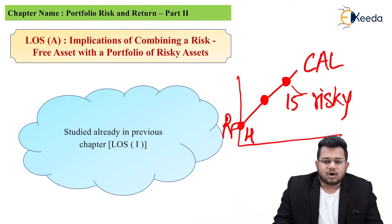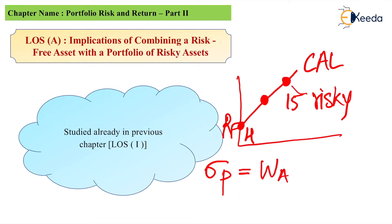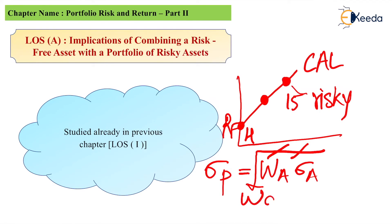Now, in this concept you had studied one unique formula: the standard deviation of the portfolio is equal to WA times Sigma A, where A is the risky portfolio. Sigma B, which is the standard deviation of the risk-free asset, was zero, so we arrived at the formula: Sigma P = WA · Sigma A. Note that there is no square root here — the square root had already cancelled out from the expression WA·Sigma A whole squared under a square root. So remember this formula: Sigma P equals WA times Sigma A.